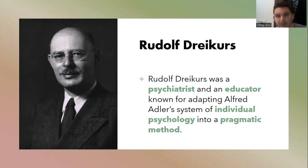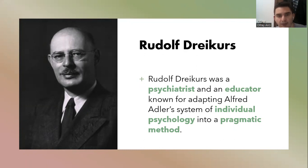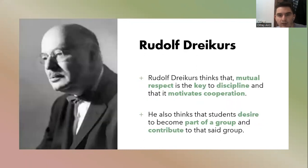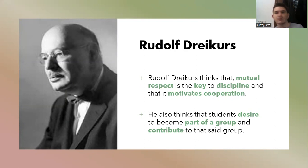By understanding the reasons behind student misbehaviour, Dreikurs thought that we can combat misbehaviour and stimulate cooperation between teachers and students. That was his way of adapting into a pragmatic method. He also thinks that mutual respect is key in the classroom — it's the key to discipline. If the teacher and the students have mutual respect for each other, this will motivate cooperation.